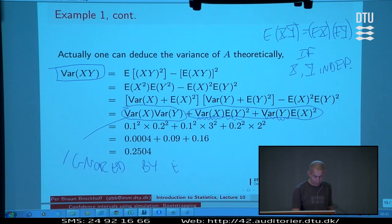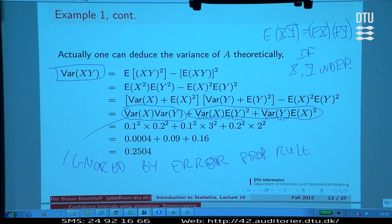What the error propagation rule ignores is actually this part. This part is ignored by the error propagation rule. But look at the size of this, it's not big and that is why it's working. This becomes a fourth order, so the error there becomes actually smaller.